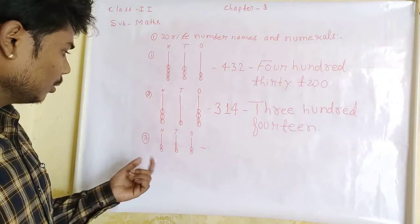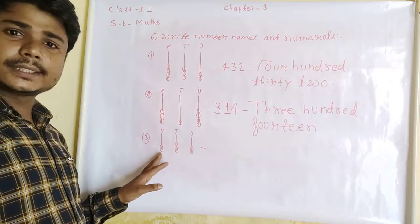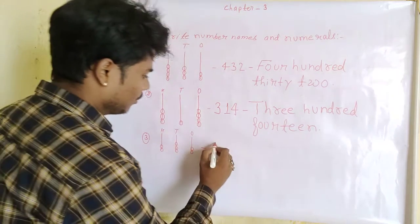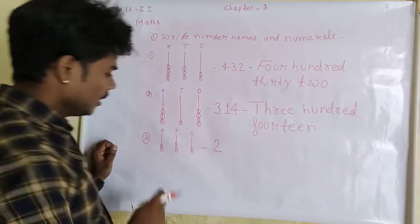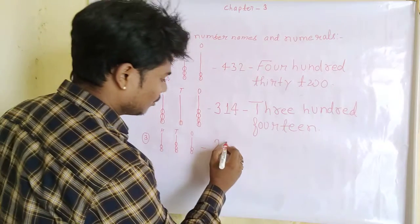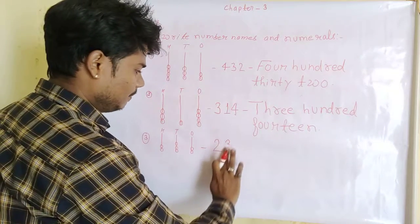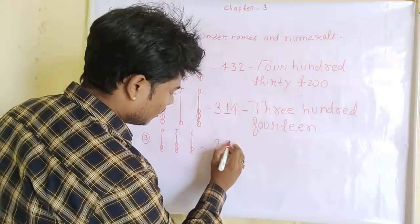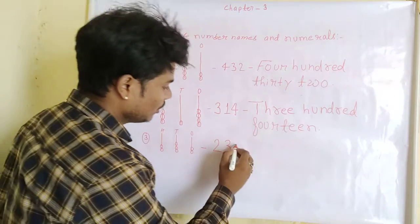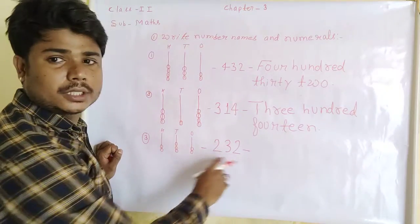Now the last question — the third question. The number of bits in the hundreds place — 1, 2 — so we write 2. Number of bits in the tens place is 3, so we write 3. And the number of bits in the ones place is 2, so write 2. So this is 232.